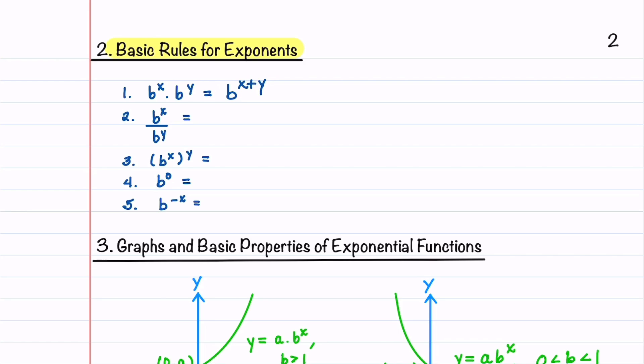For the second one, when you have b to the x divided by b to the y, instead of adding the exponents, you're going to subtract them. Our third one is b to the x raised to the y, and in this case, you multiply the exponents. Our fourth one is b raised to the zero. So any number other than zero raised to the zero is going to equal one. Our last one is b to the minus x, and this equals one over b raised to the x. You can think of b to the minus x as b to the minus one raised to the x, which is one over b to the x. If we have one half raised to the x, this is just the same as two to the minus x.